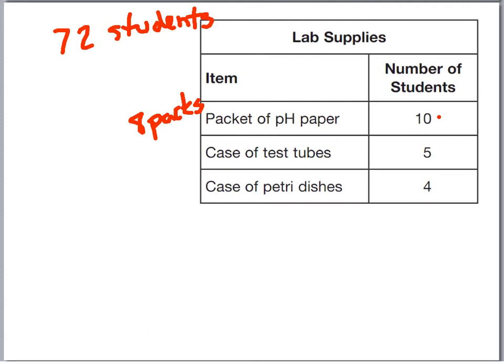Now let's look at the case of test tubes. 5 students can use a case of test tubes, and we have 72 students. Not to leave anybody out — how close can we come to 72? 5 times 14 is 70, but we need to take care of that remainder, so we're going to bump it up. We'll have a little extra left over, but for the case of test tubes that would be 15 cases.